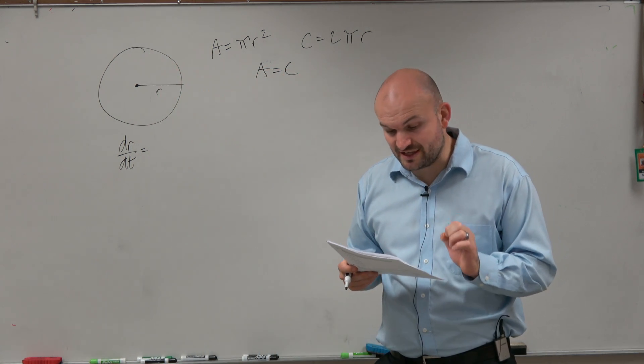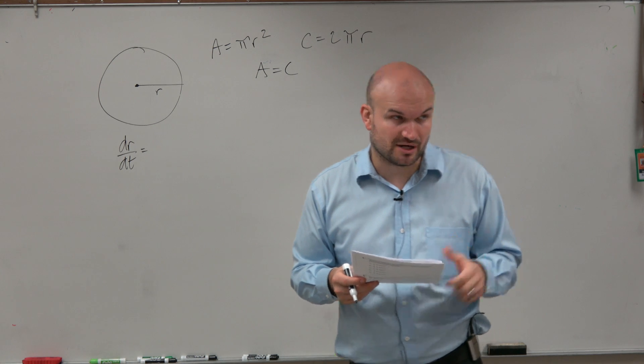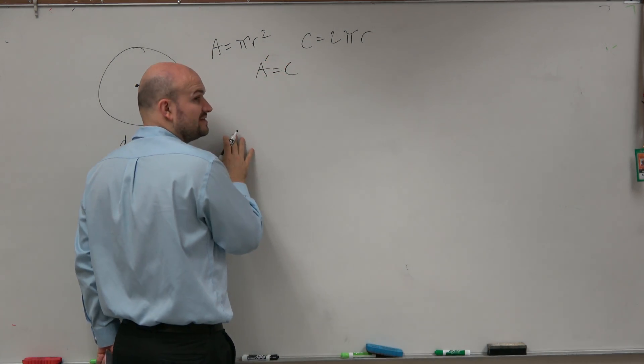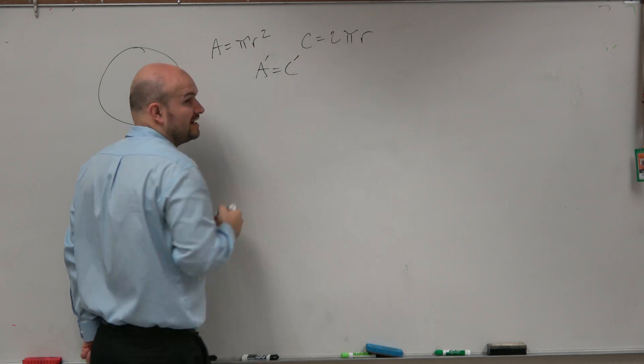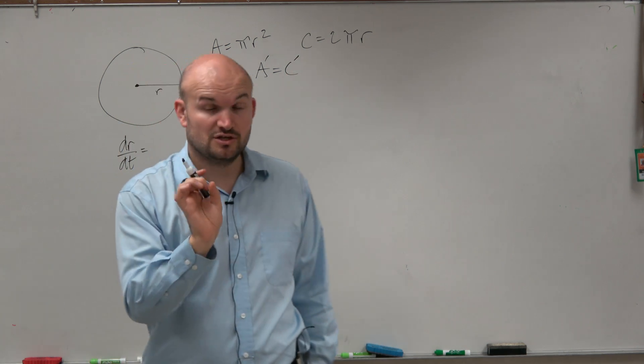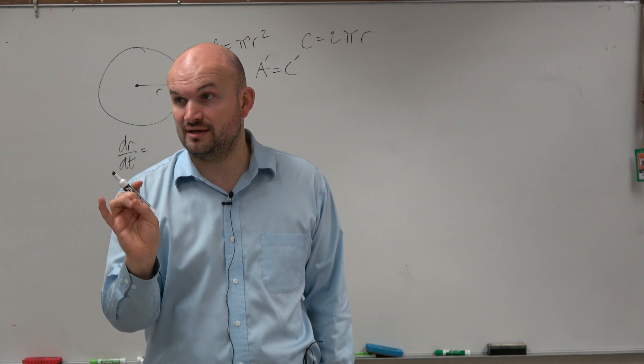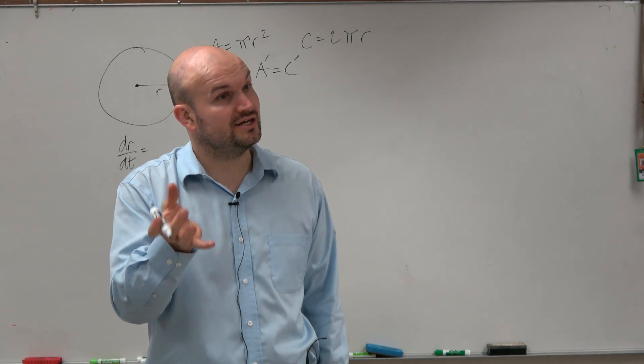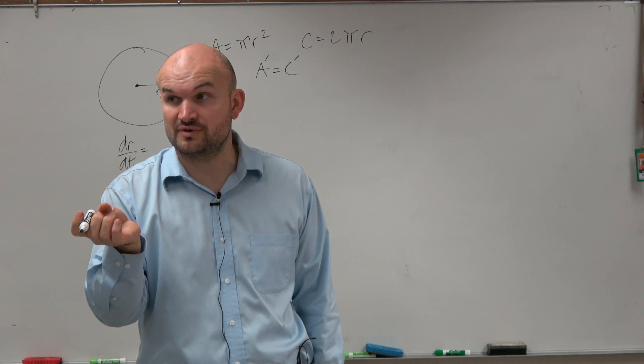But it says the rate of increase in the area of the circle is numerically. So that's important, actually. It's not A equals C. The rate of increase of the area is equal to the rate of the increase of the circumference. So it's the derivative of each of those. Didn't say the area is equal to the circumference. It says the rate of change in the area is equal to the rate of change of the circumference.